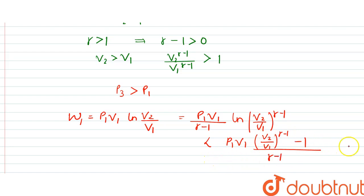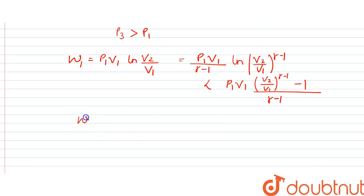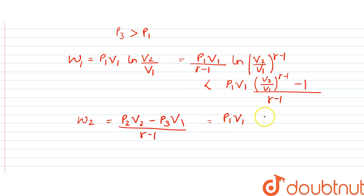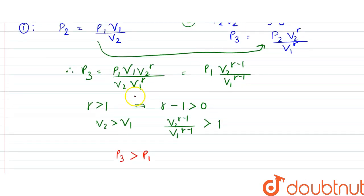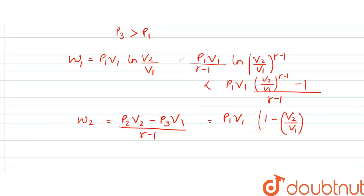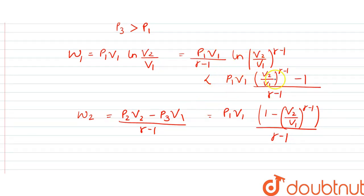In the second process, the adiabatic work done is W2 = (p2·v2 − p3·v1) / (γ−1). Substituting p2 and p3 from the above equations and taking p1·v1 common, we get W2 = p1·v1·[1 − (v2/v1)^(γ−1)] / (γ−1). The net work done is the sum of these two contributions.